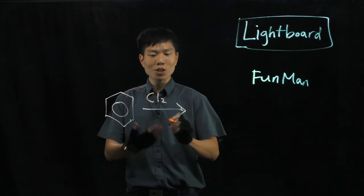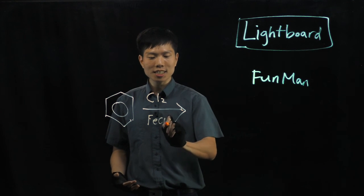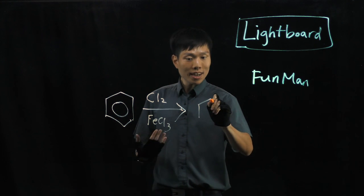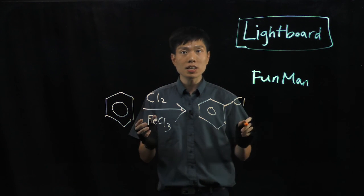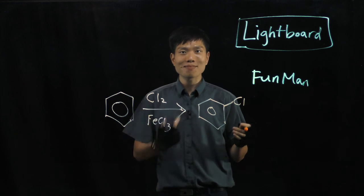Now suppose I draw this benzene ring and chlorine, giving you a simple reaction here, and you can see my expression while I do this. That means you can pay attention to which part is very important just by looking at my expression.